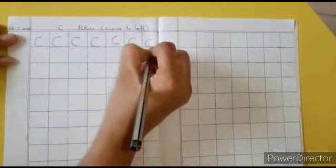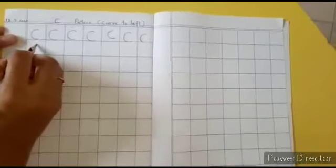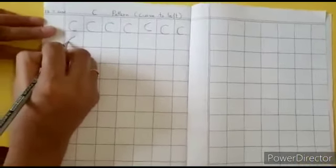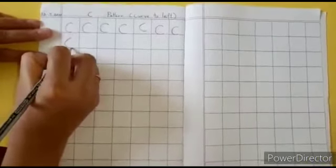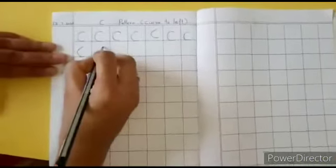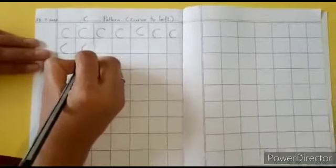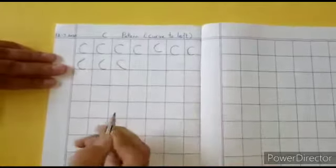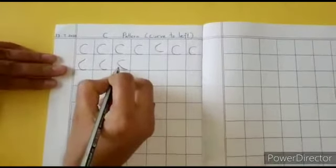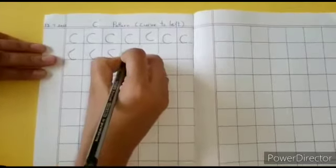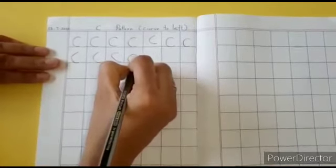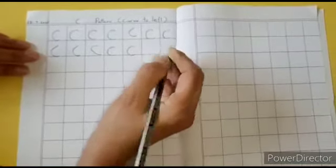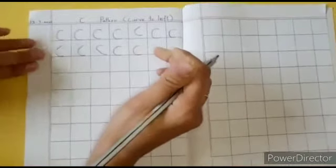This is C pattern or curve to left. Do not write wrong patterns like starting with a curve line and ending with a curve, or starting with a standing line and ending with a curve — these are wrong patterns. Write it properly: a curve to the left touching the bottom line. That's all about the pattern. Do practice this at home. Thank you, children.